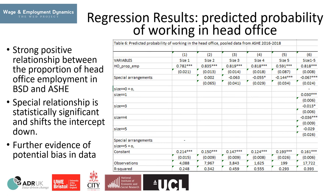Controlling for special arrangements, introduced in model 2, shifts the intercept downwards. This suggests that when special arrangements are in place in ASH, we see a relatively lower percentage employed at the head office. This is further evidence in support of the potential bias in the dataset.